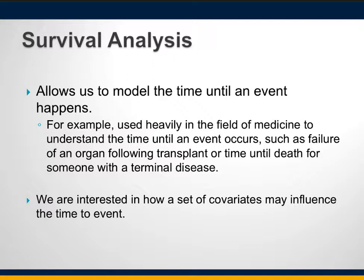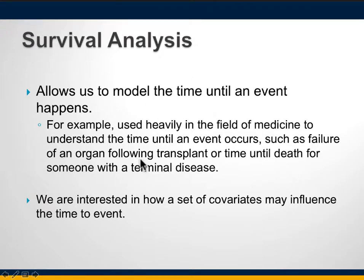We are interested in how a set of covariates — variables that are related to each other — may influence the time to a given event, such as the failure of an organ following a transplant, the time of death, or when a server goes down. The examples use the survival package in R, including the ovarian cancer dataset with variables such as survival time, censoring status, age, residual disease, treatment group, and ECOG performance status.